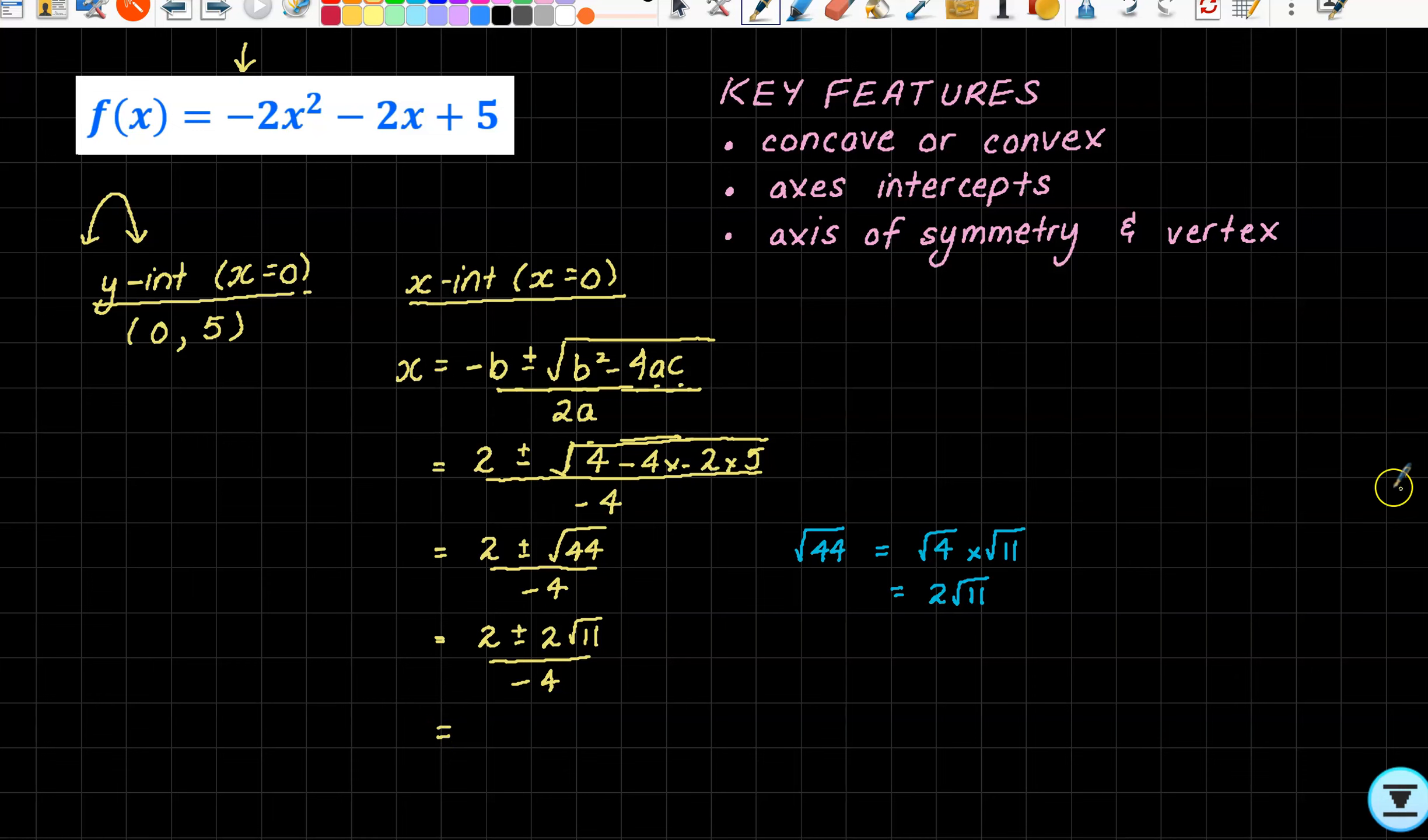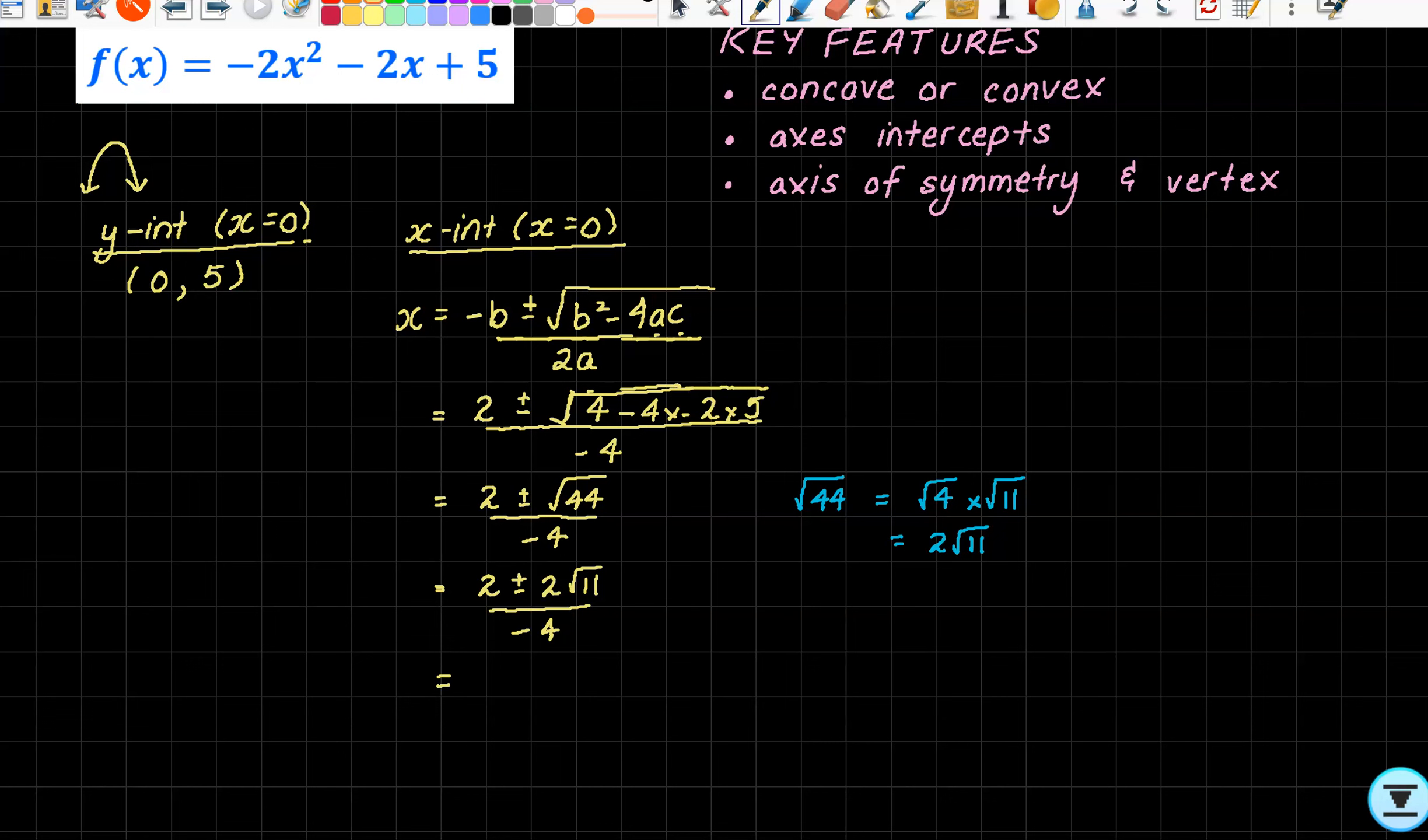So we've now got (2 ± 2√11) / -4. Now I can actually divide the 2, 2, and -4. I can divide those by -2 to make it look nice. So 2 divided by -2 is -1.